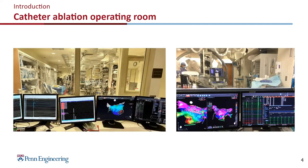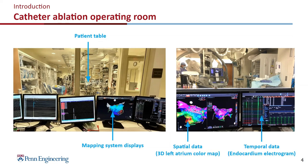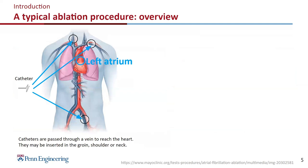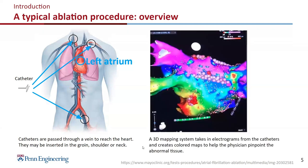Here are some photos of the operating room. There is a patient table behind the glass and multiple computer screens displaying the mapping system's information, which includes spatial data and temporal data. We also have X-ray and echocardiograph alongside the mapping system, and this will be the patient data we work with. Catheter ablation is a minimally invasive surgery. The catheters are inserted through a vein to the heart — they can go through the groin, the shoulder, or neck. Then the 3D mapping system takes in the measurements and displays it on the atrium.